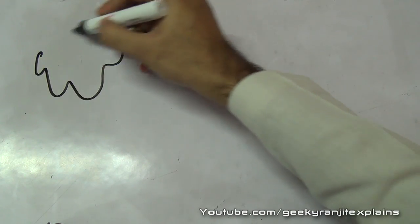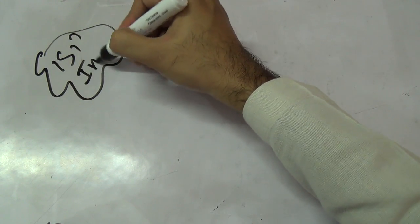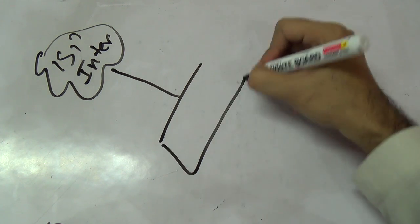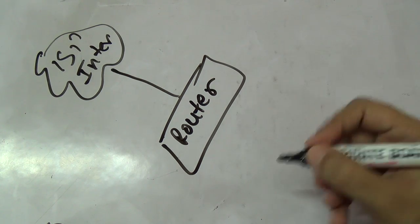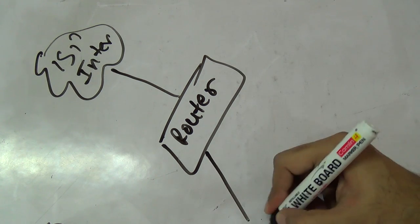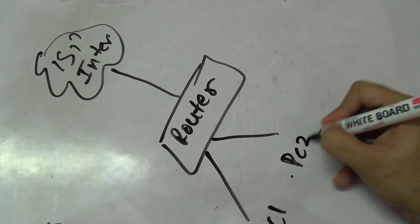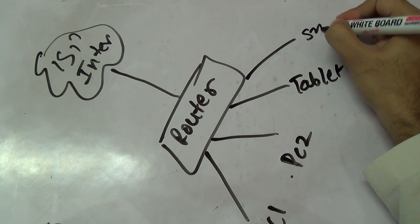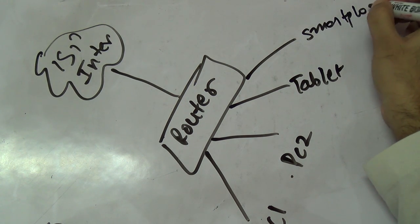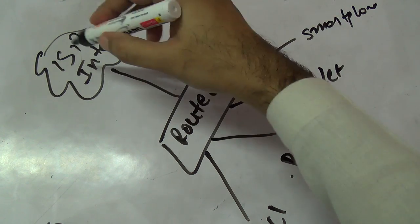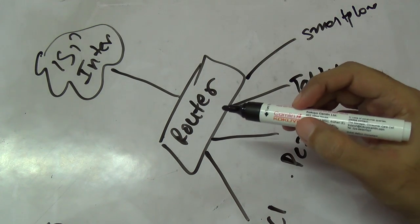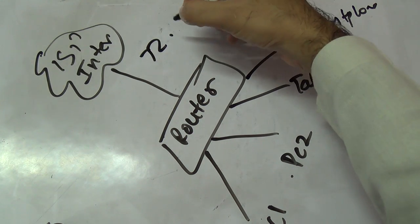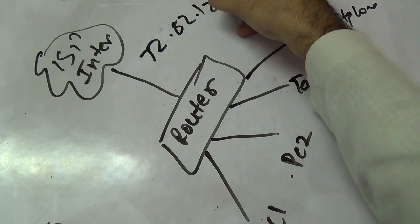Let's say this is your ISP internet, and we have your router sitting here connected to the internet. Now you have your devices, for example PC1, PC2, tablet, smartphone, etc. Your ISP provides you an internet IP address - a public IP address that your ISP assigns you.